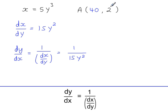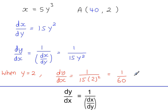So if we take the y-coordinate here and substitute that into this, we will get dy by dx, the gradient of the curve and the gradient of the tangent. The gradient of the curve and the tangent at the point A is 1 over 60.